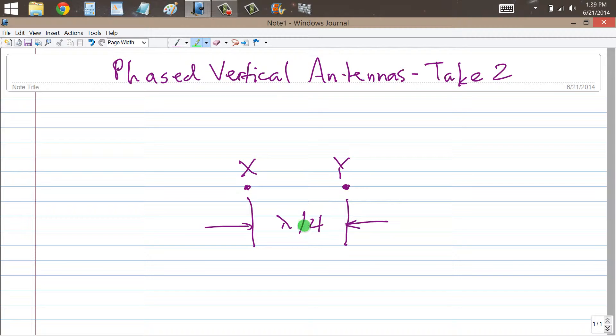you separate them by a quarter of a wavelength in free space. That is simply half the distance that you would get by using the half wavelength formula, a quarter of a wavelength in free space.